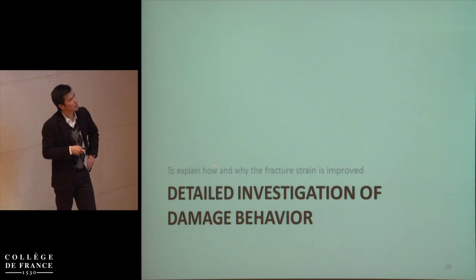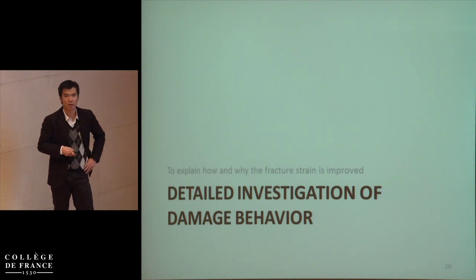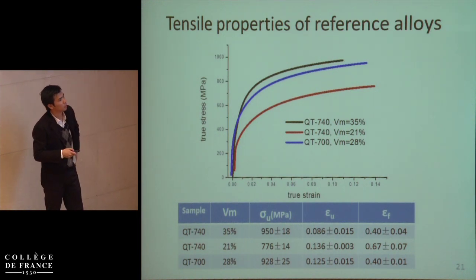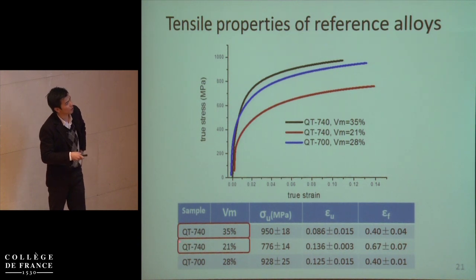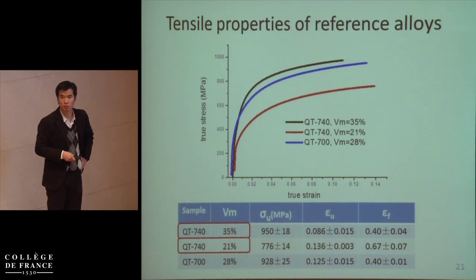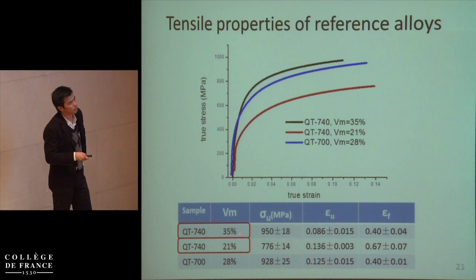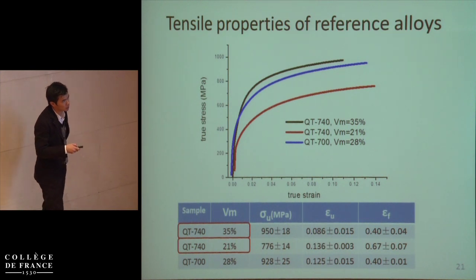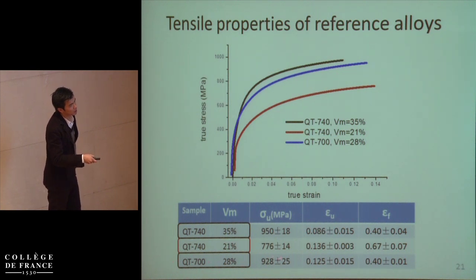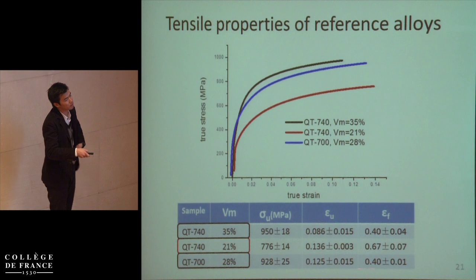To support this analysis we need experimental proof, so I do a detailed investigation of damage behavior to explain how and why fracture strength can be improved in QT740. I selected three reference alloys. For the two both at 740°C but with different martensite contents, all tensile properties are sensitive to martensite content: with more martensite we have higher strength but lower uniform elongation and lower fracture strength. It is interesting to compare QT700 with less martensite — it can have very similar strength level and higher uniform elongation but just the same fracture strength.